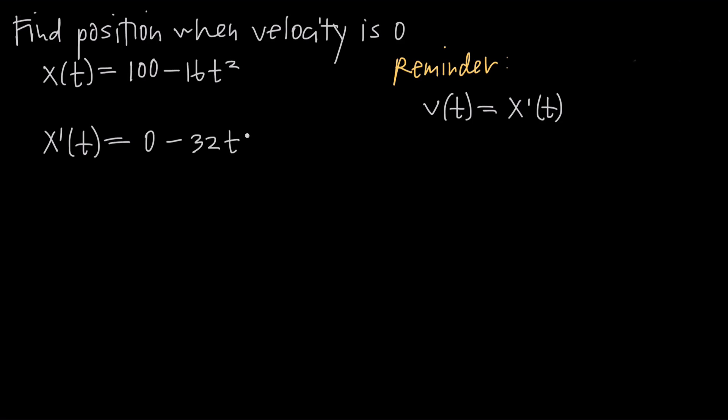And then we subtract 1 from the exponent. So 2 minus 1 is 1. So that exponent then is 1. Which means that our derivative, x'(t), is going to be equal to negative 32t. And remember this is the derivative of position, which we've already said is the exact same thing as velocity. So the velocity function is negative 32t.